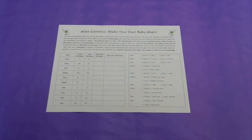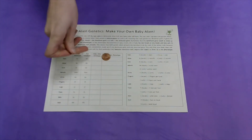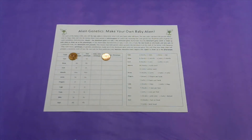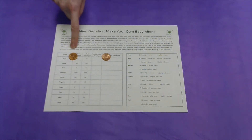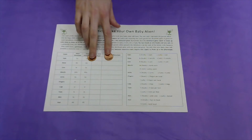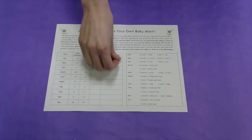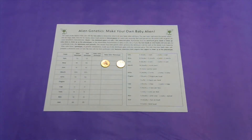Alien Genetics. For each of the below traits, you will flip two coins to determine what trait your baby alien will have. The two coins represent the parent aliens — one for papa alien and one for mama alien. Each parent is heterozygous for each trait, meaning that each parent has dissimilar pairs of genes for each hereditary characteristic. Heads equals the dominant gene, and tails equals the recessive gene.